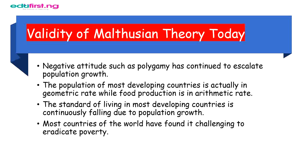Now let's look at the validity of Malthusian theories today. There are some elements of Malthus's theory that reflect current realities. Negative attitudes such as polygamy have continued to escalate population growth, visible in West African and other developing countries — for example, one person marrying three wives and having 16 children. The population of most developing countries is growing in geometric rate while food production grows in arithmetic rate. The standard of living in most developing countries is continuously falling due to population growth, and most countries find it seriously challenging to eradicate poverty despite different government policies.